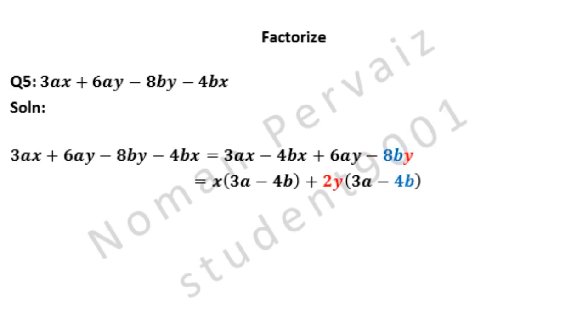Since 2y is common, 4b will be left from 8by, because 2 times 4 are 8, and b is written with it.